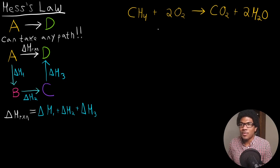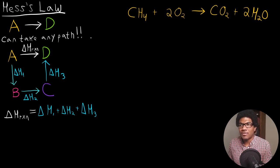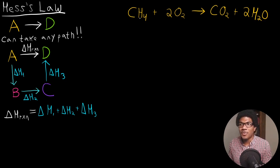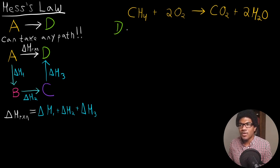Let's take this reaction written up here — the combustion of methane, CH4. Let's say we're after the delta H of this reaction. We can think of any convenient path to get there. What turns out to be a very convenient path for any chemical reaction is imagining the reactants breaking down into their elemental components, and then those elemental components coming back together to form the products. So the path we want to think about is: first, the reactants will break down into their elemental components.